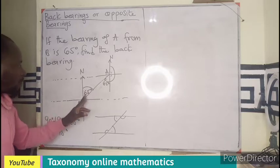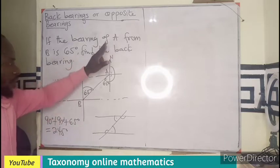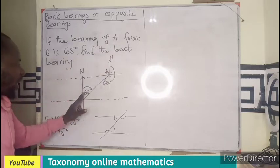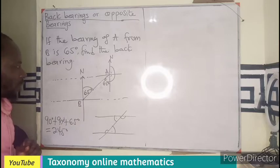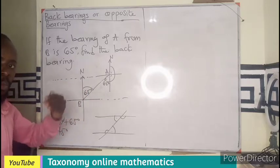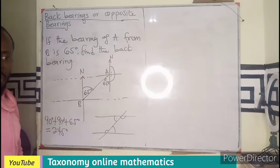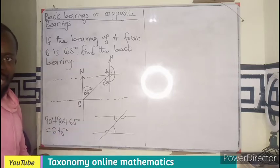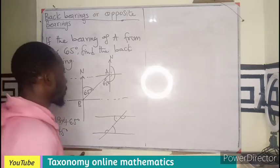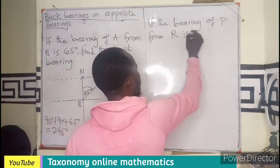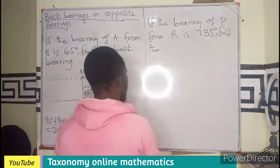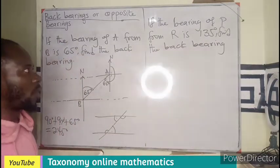The bearing of A from B was given as 65 degrees. All we are looking for is to find the back bearing — the opposite bearing moving in reverse direction. We go to the north of A and measure that direction to get 245 degrees.